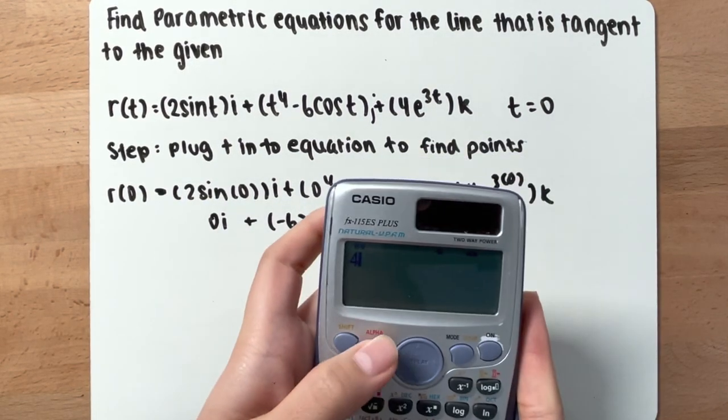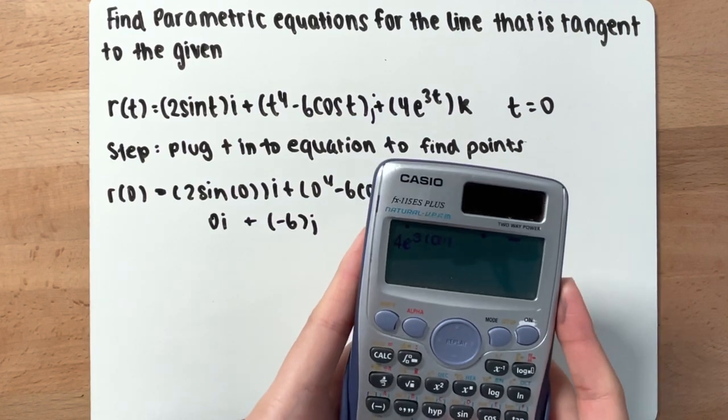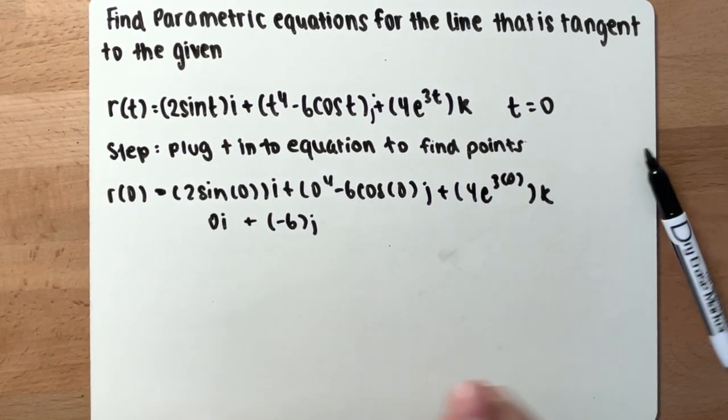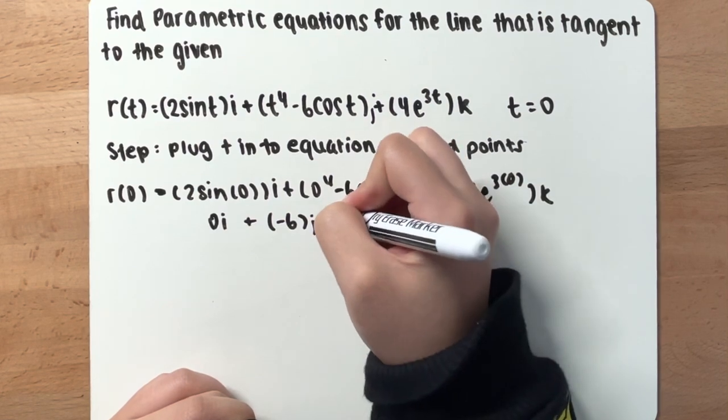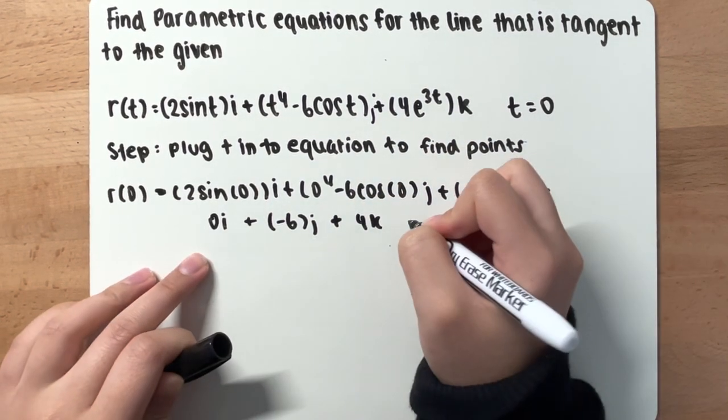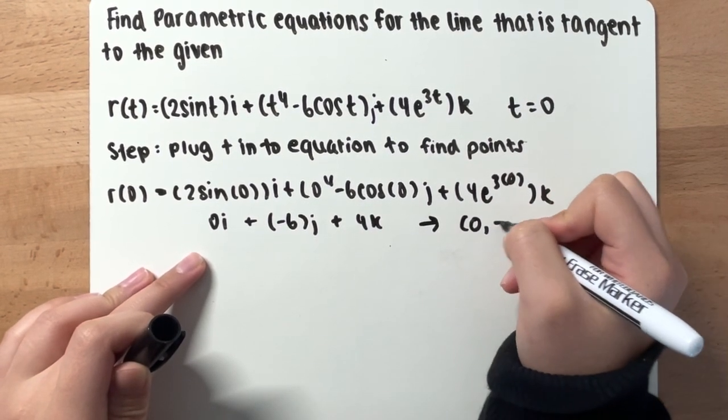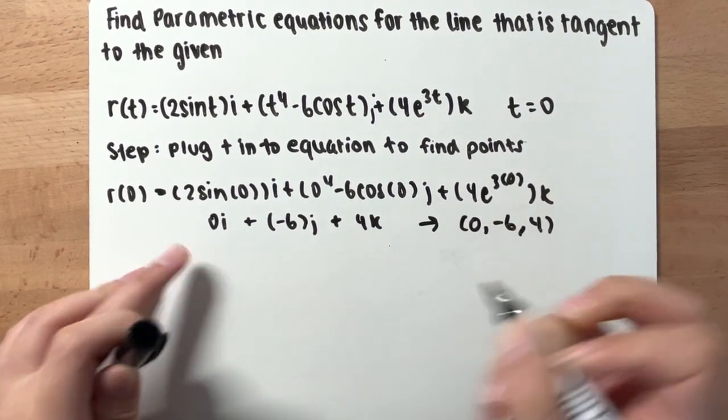4e to the 3 times 0 power, you get 4k. Okay, now if you put this into points, you have 0, negative 6, and 4. Alright.